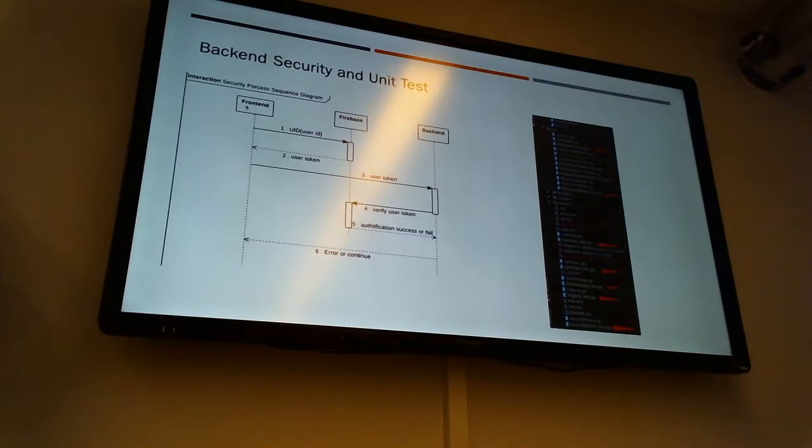The frontend first sends the UID to the Firebase. And then the Firebase will return the user's token to the frontend. Then the frontend will send the user's token to the backend. And the backend will verify this user's token via the Firebase.